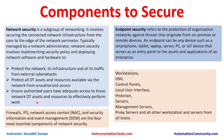The major components in network security are: firewalls, intrusion prevention systems, network access controls, and security information and event management (SIEM). These are the four most essential components. Firewalls provide segmentation and are placed between two zones to monitor all traffic passing from one zone to another.